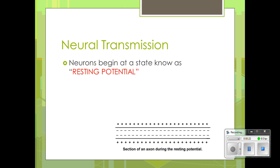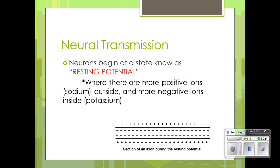One thing you need to understand is that neurons begin at what's known as a resting potential. Neurons begin where there are more positive ions outside the neurons and more negative ions inside. You can see along the axon there are more positives outside and the negatives are in. This is what's known as resting potential.